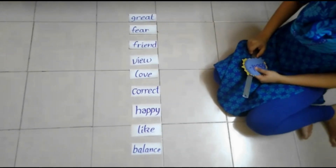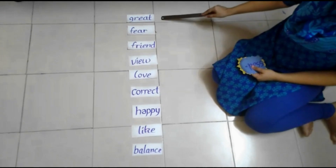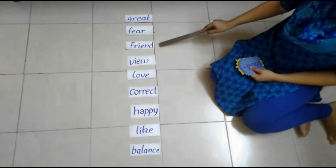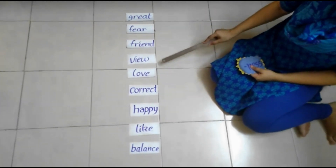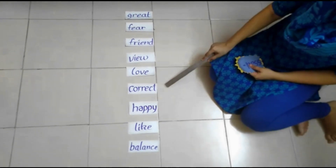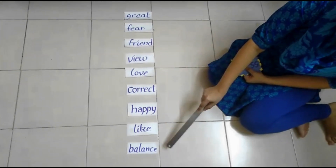I have planned one activity for you all where you have to match the prefix and suffix to its base word. I have selected some words for you all. Let me read them out to you: great, pure, friend, view, love, correct, happy, like, and balance.